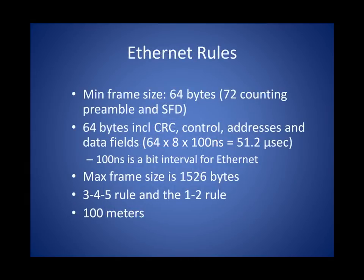Here are some of the Ethernet rules. The minimum frame size is 64 bytes, which follows from the 46-byte minimum payload — add the headers and there we have it. 64 bytes converted to bits gives us 512. If we multiply that by the time it takes to transmit a single bit, we get about 51.2 microseconds, which we call the slot time. The maximum frame size is 1526.